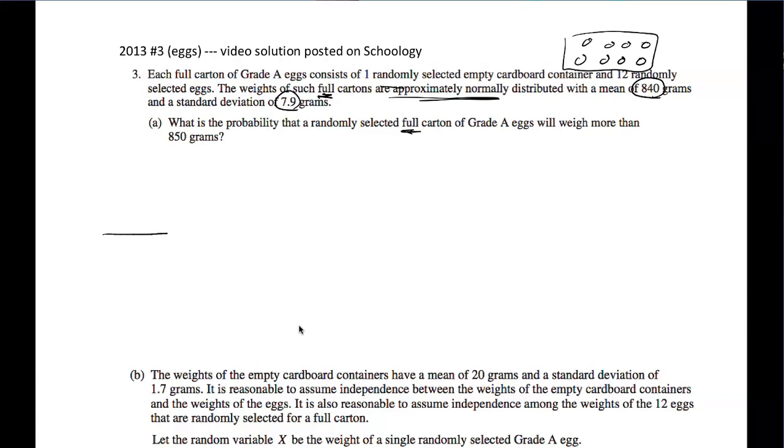Well, we were told that we have an approximately normal distribution, so let's sketch our normal curve. We were told the mean is 840 grams. The standard deviation of a full carton is 7.9 grams. And 850 looks like it's going to be more than one standard deviation above the mean, so I might guess right about here, 850. And we want the probability that the weight W of a full carton is greater than 850 grams. So we're shading to the right.